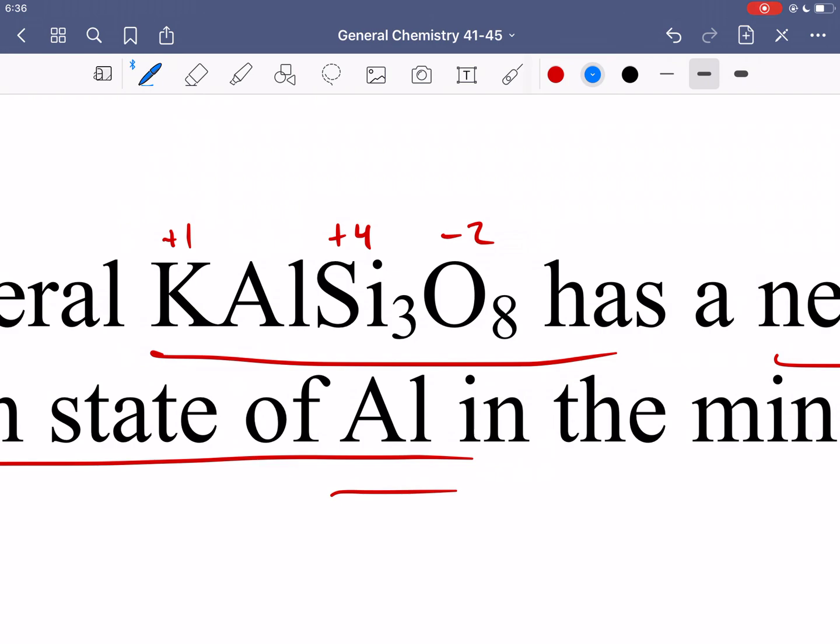Also keep in mind how many of each element we have. We have one potassium so it's going to remain plus 1 but we have 3 of silicon so it's going to be 4 times 3 which is 12 and then similarly we have 8 oxygen so instead of just 2 it's 2 times 8 which gives us overall 16 and when we add these up we get negative 3. But we were told there's a net oxidation state of 0 so the rest must be coming from aluminum so minus 3 to make that 0 we must have plus 3.